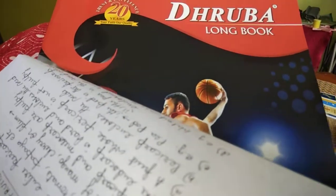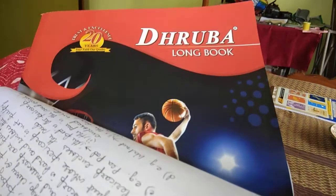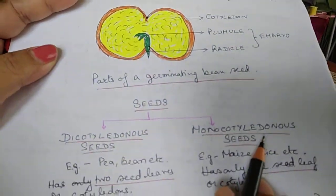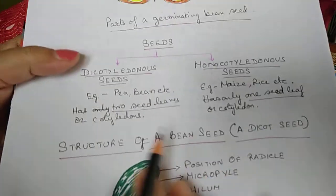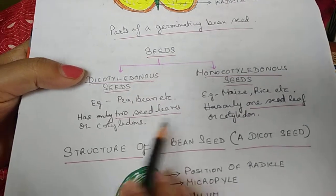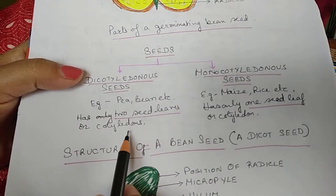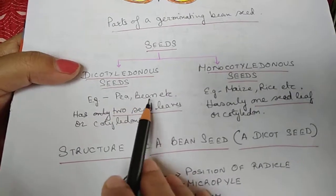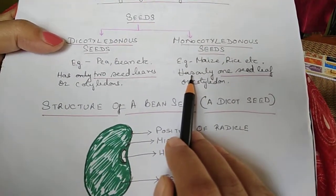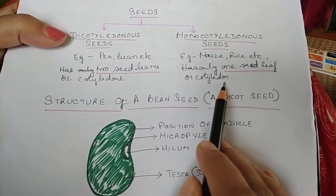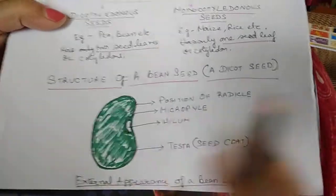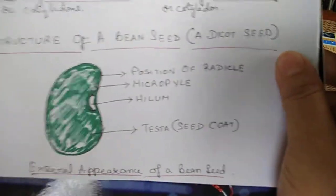Seeds are of two types: dicotyledonous and monocotyledonous. In dicotyledonous seeds, we see two seed leaves or cotyledons — for example, pea and beans. In monocotyledonous seeds, there is only one seed leaf or cotyledon — found in maize, rice, etc.